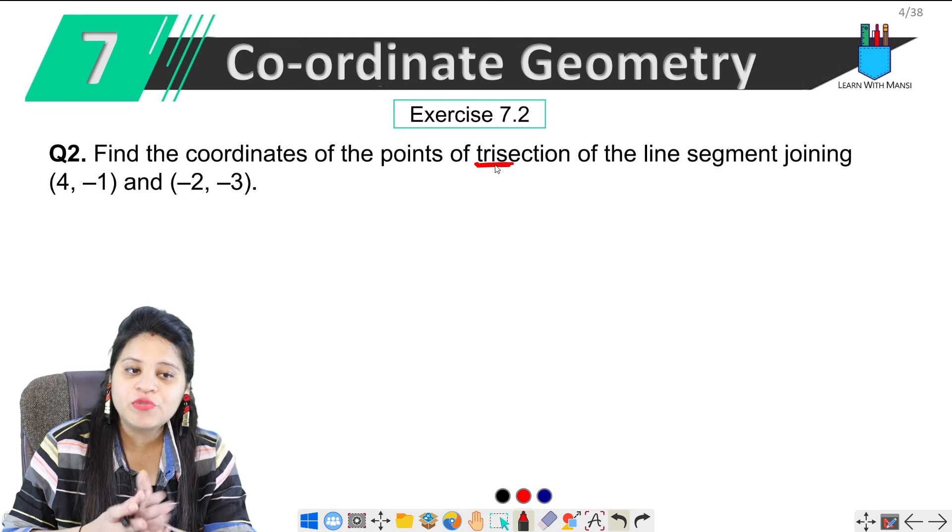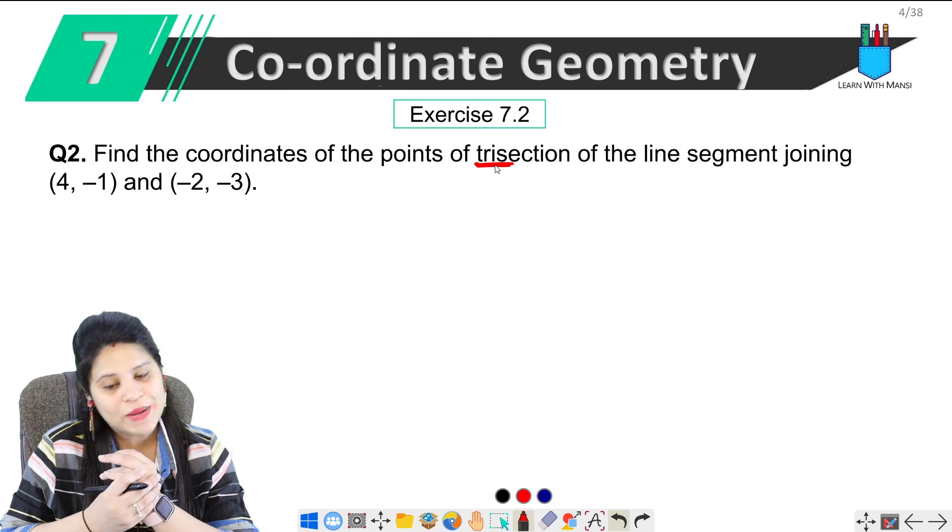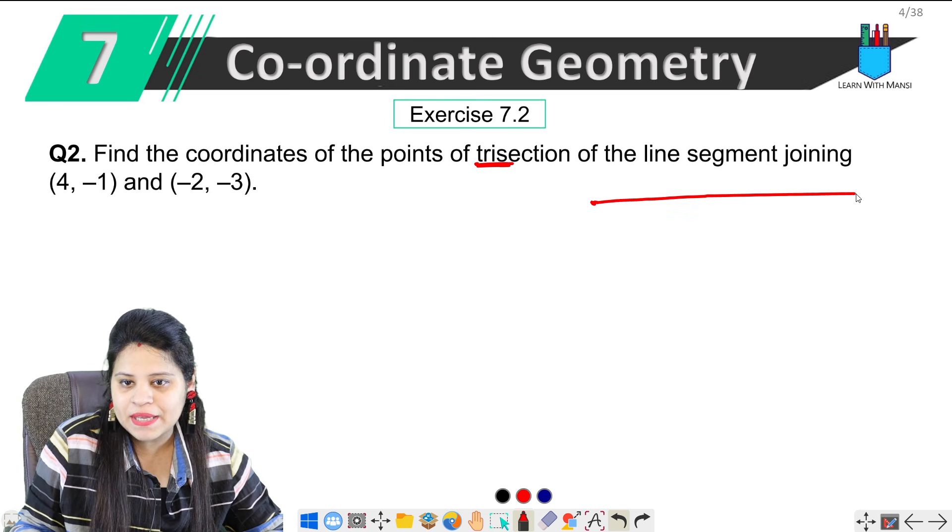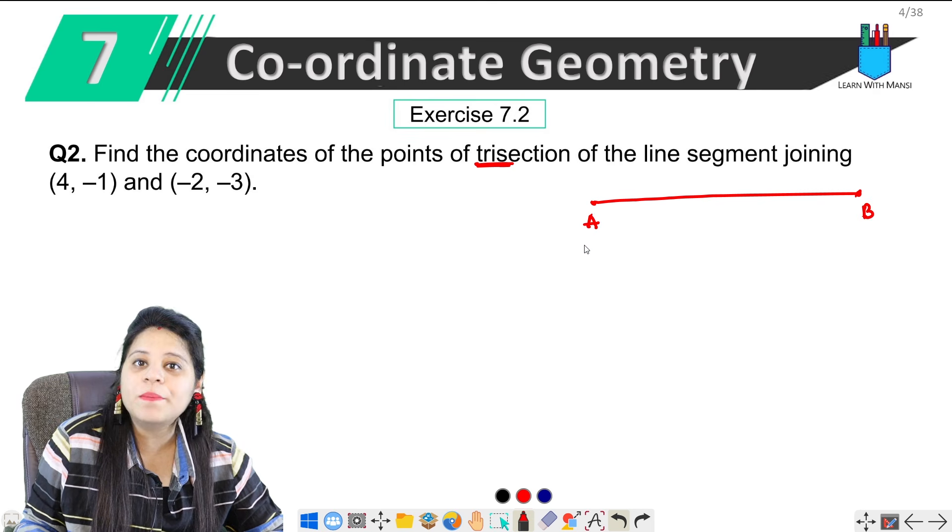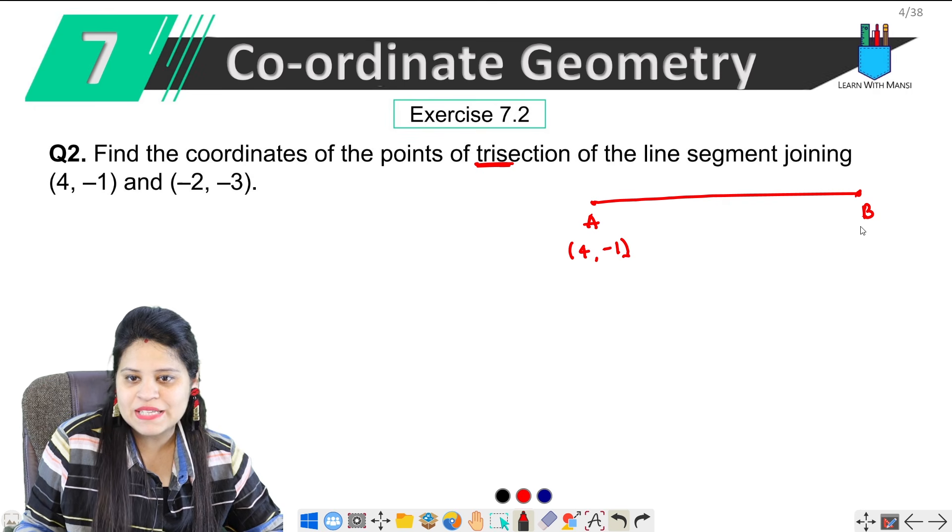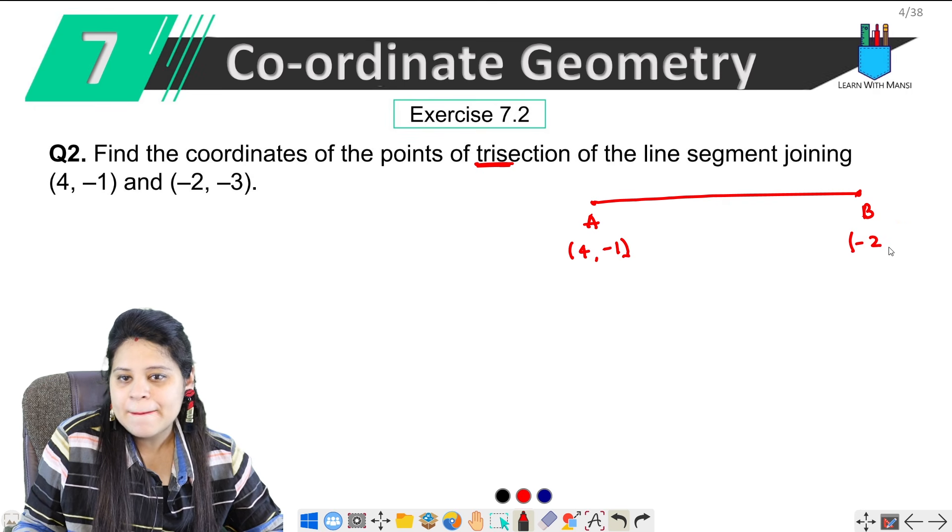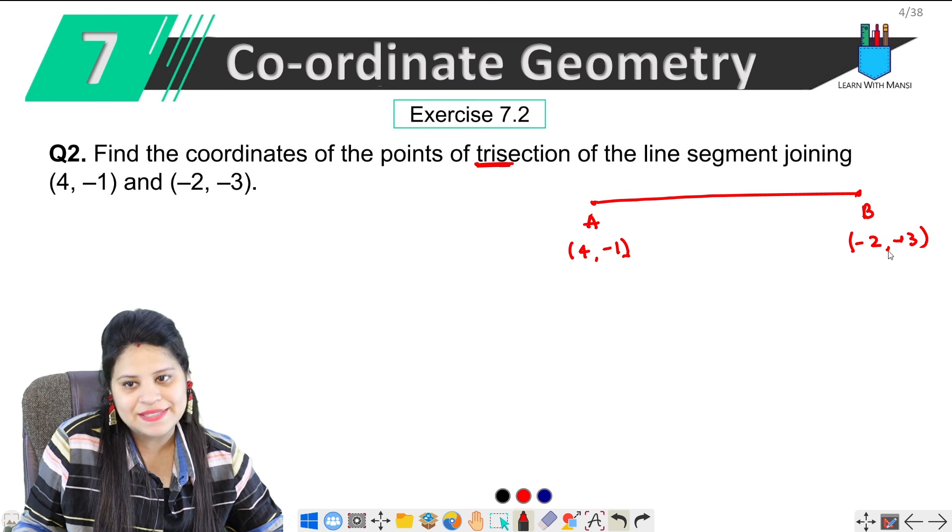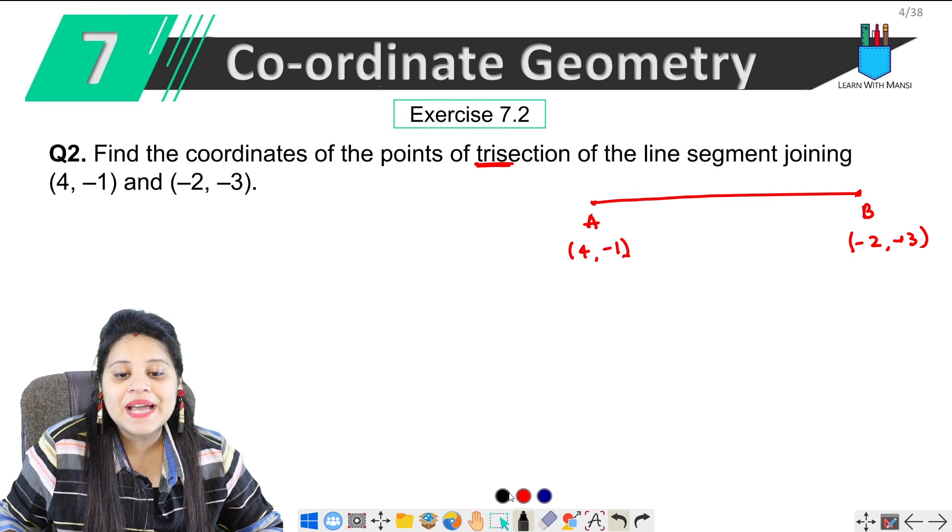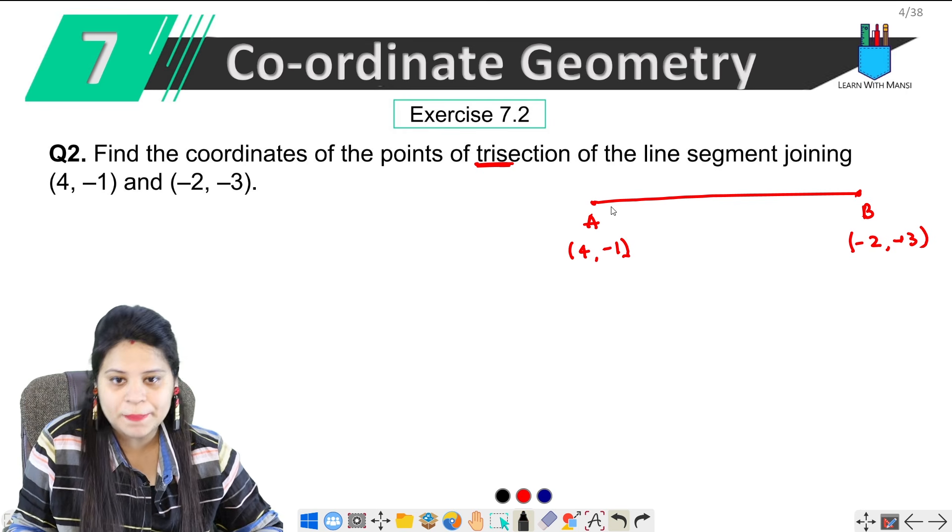Of the line segment joining (4, -1) and (-2, -3). Dekho, simple sa question hai. Again, do points diye hain. Let's take point A and point B. A aur B ke coordinates kya hai? A kya ho gaya 4, -1. B ke coordinates ho gaya -2, -3.